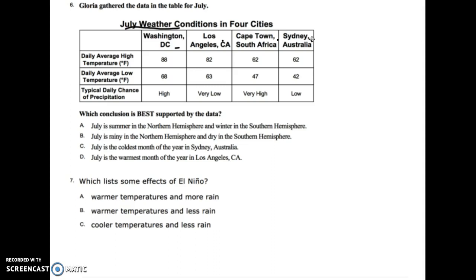I'm fairly certain July isn't the coldest in January or February, but there might be other months hotter than July. I have to see the whole weather data. Can I tell you July is the coldest month of the year in Australia based off this chart? I don't know — does it get colder than 42 there? I don't know. I need more data. The answer that July is rainy in the Northern Hemisphere and dry in the Southern Hemisphere — I'm not too sure that's fully supported either.